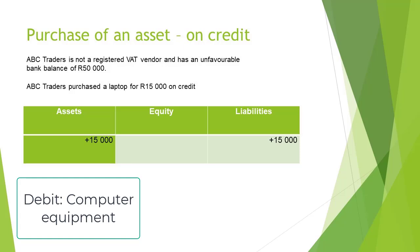So, if we now say that ABC Traders purchased a laptop for 15,000 Rand on credit, the laptop or computer equipment account is still an asset and will increase assets on the accounting equation.